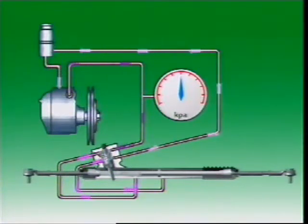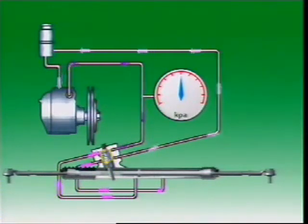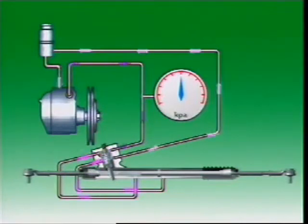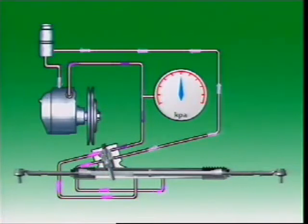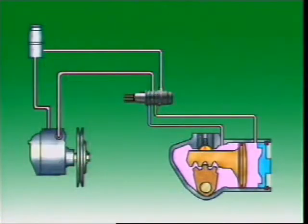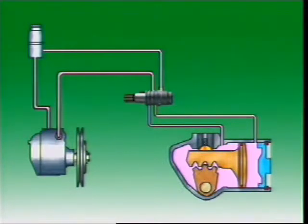When the steering is turned, a rotary valve integral to the steering input shaft directs fluid to one side or the other of a piston attached to the steering gear. Pressure then increases as required to provide assistance. In a worm and roller steering box, the piston slides in a cylinder in the casing. It has an extension formed on one side with teeth which engage teeth on the pitman shaft.